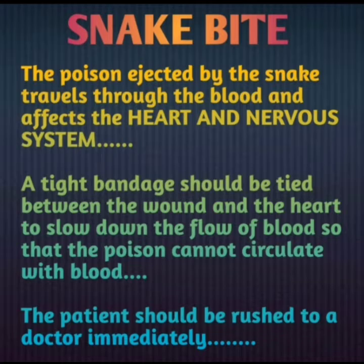A tight bandage should be tied between the wound and the heart to slow down the flow of blood, so that the poison cannot circulate with the blood and will not reach the heart and nervous system.